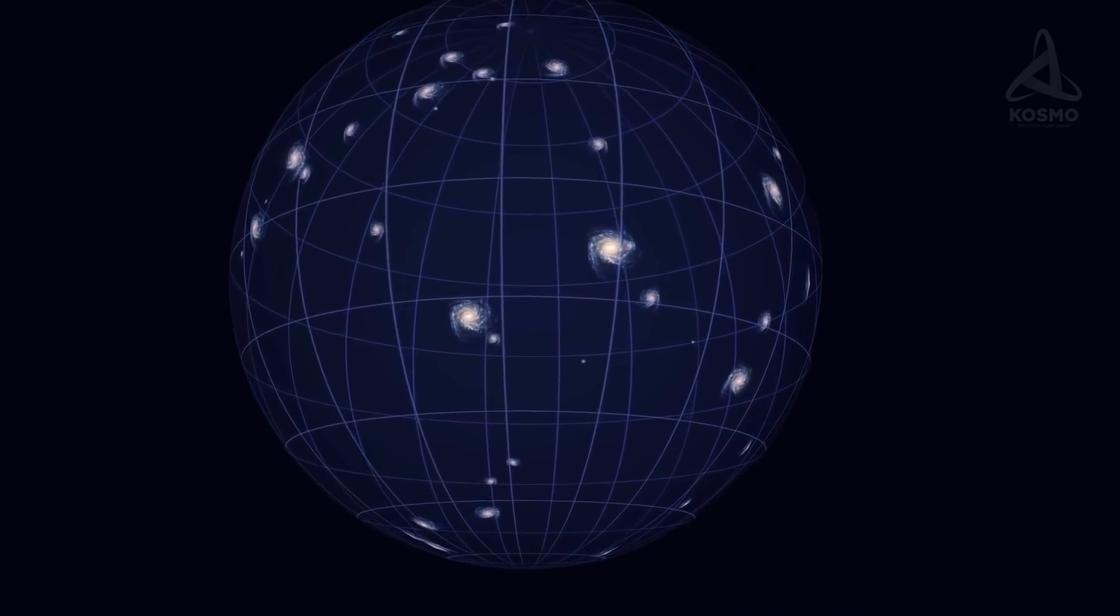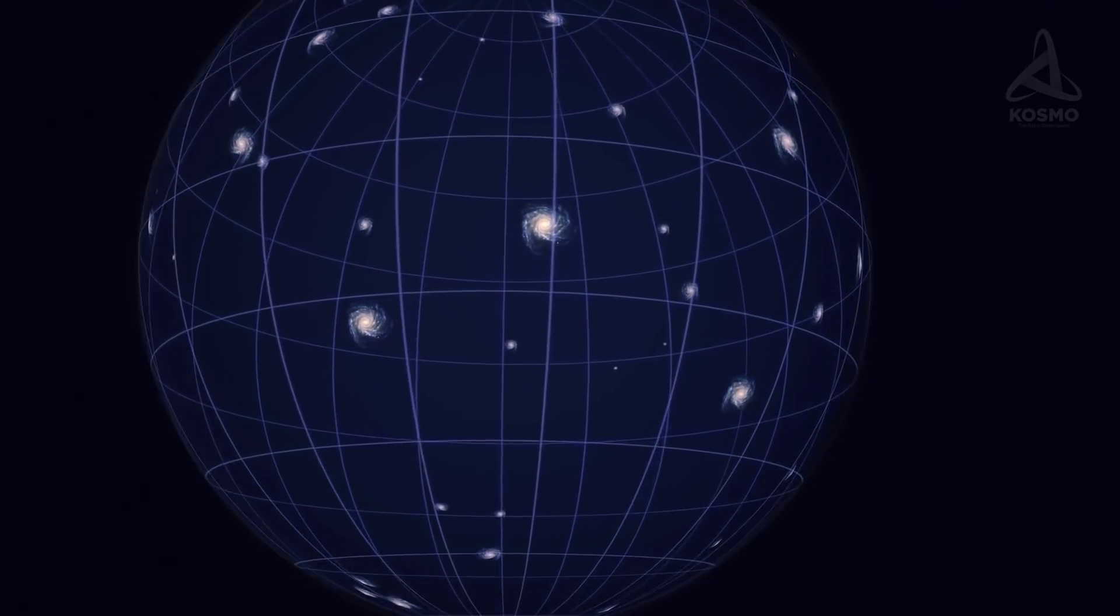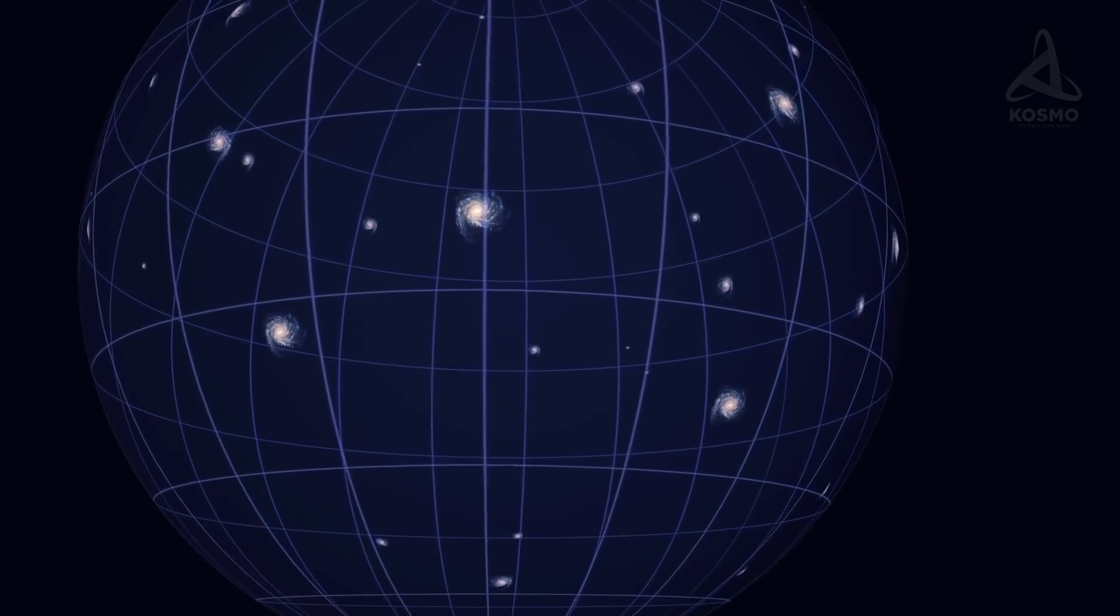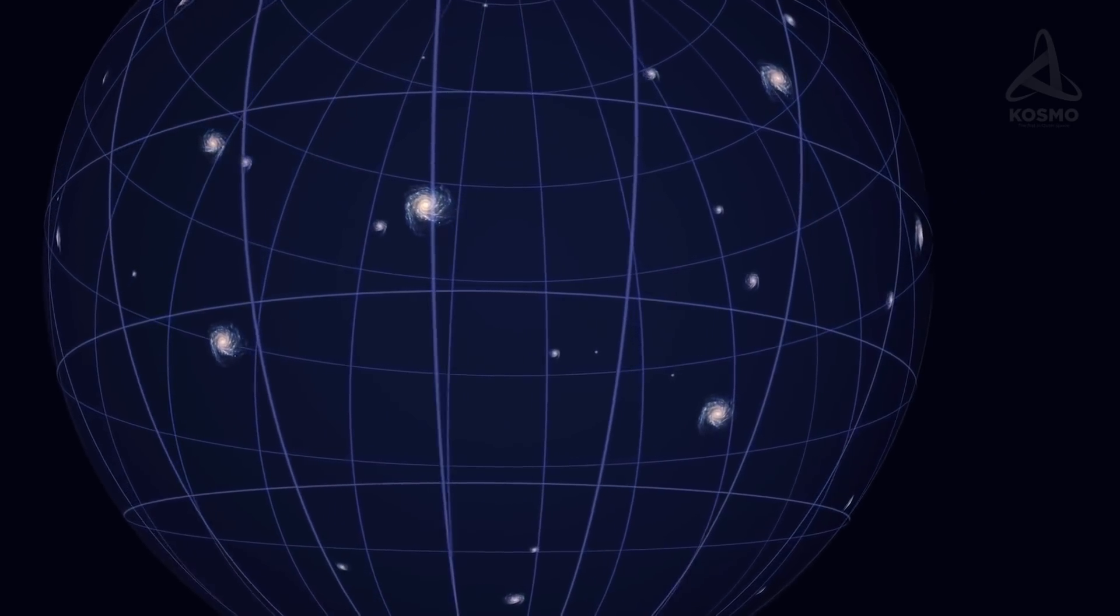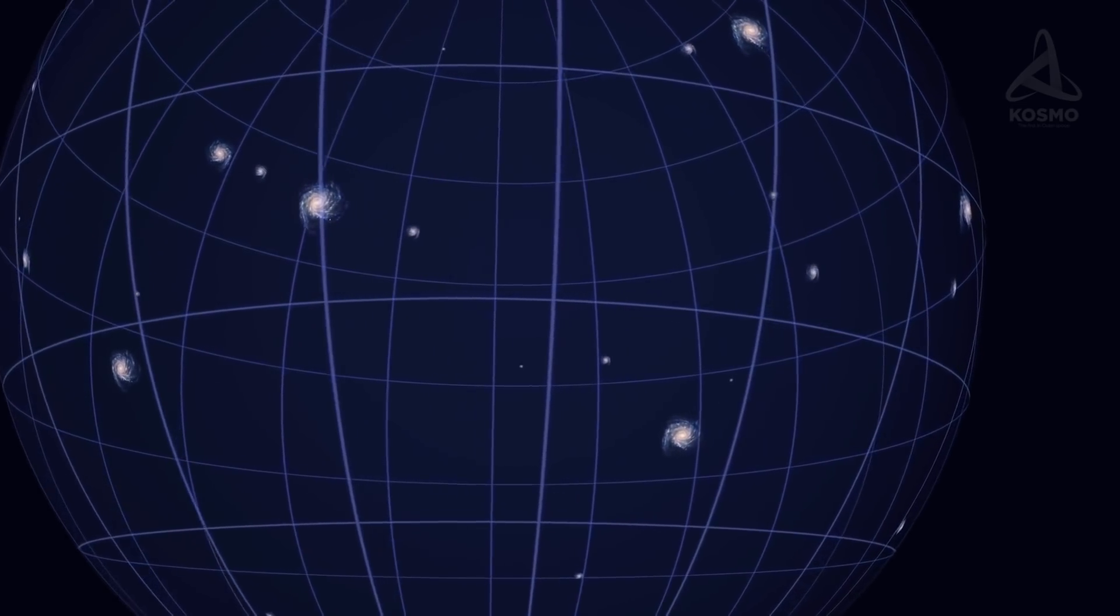The further the dots are initially located, the faster they get still further apart. At a certain point, this rate exceeds the speed of light. This point is known as the event horizon. All objects beyond it disappear from view, and they drift away beyond the reach of the most advanced telescopes, never to be observed again.